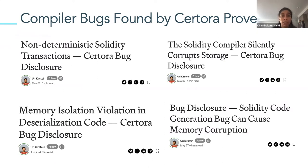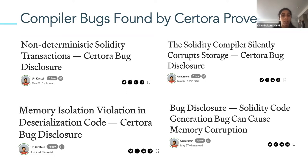Here are some examples of bugs we've found — you can go to our website and read more details. That is one of the best advantages of working at the bytecode level. We are also actively working on supporting other low-level representations; for example, WASM is another representation we would be interested in supporting.